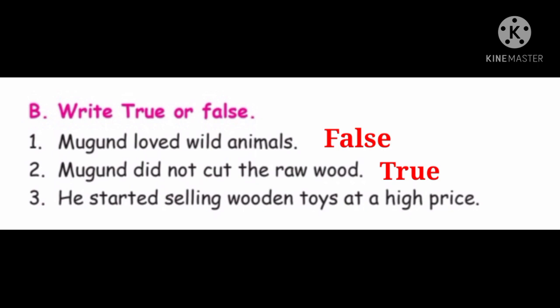Third question: He started selling wooden toys at a high price. He sold all his wooden toys at a high price — true or false? The answer is false, because Muhun sold his wooden toys at a very low, lowest price. So the answer is false.